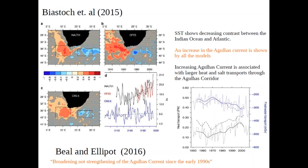However, Beal and Elipot 2016 using observations found something contrary: broadening, not strengthening, of the Agulhas current since early 1990. Even though the westerlies are enhancing, it doesn't mean the Agulhas current is also strengthening — instead they found the current is broadening. Based on this, I started thinking about estimating the transport across sections at 35 south and 30 south using a product developed by Claudia: an Argo and SSH product.